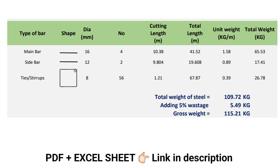This is the tabular form of the Bar Bending Schedule (BBS) for this column, which contains the type of bar, shape of bar, diameter of bar, number of bars, cutting length, total length, unit weight, and total weight of bars.